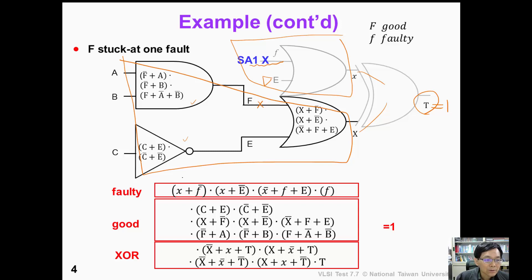So this is our CNF. The top four clauses correspond to the faulty circuit. These three clauses are the OR gates and F is stuck at 1.